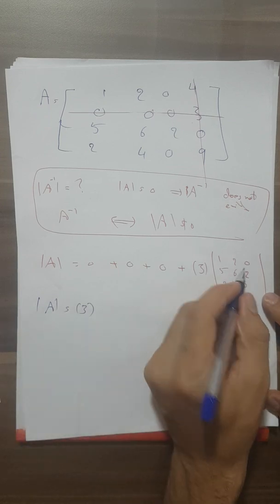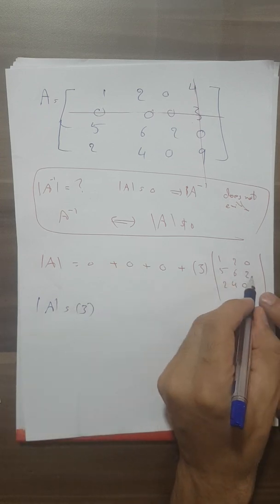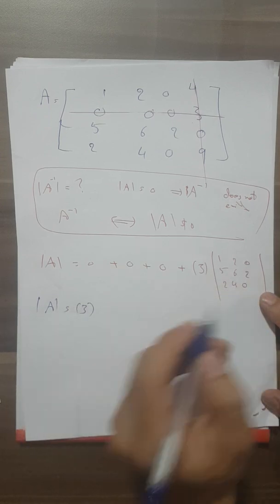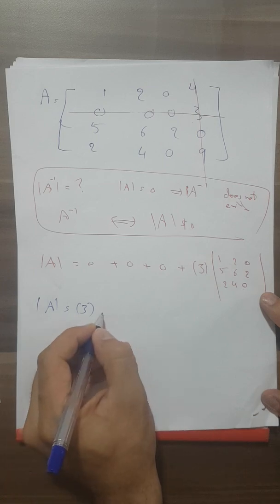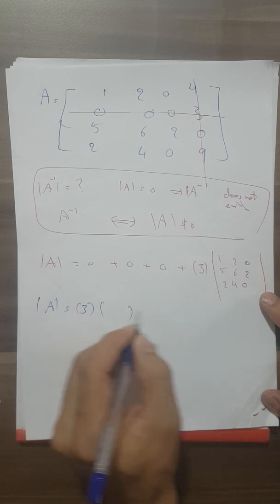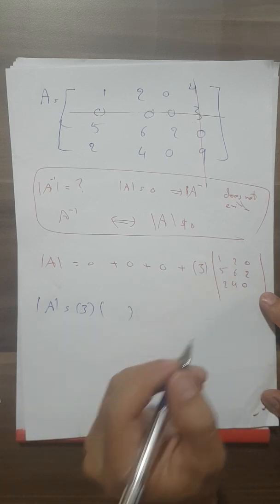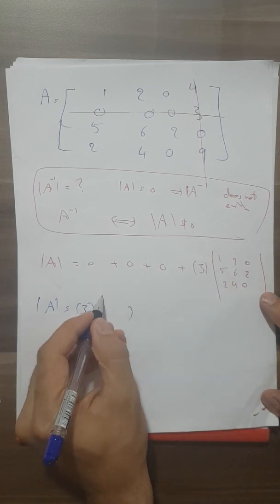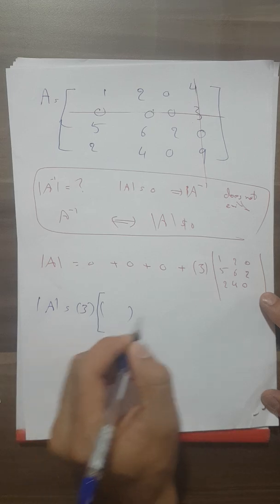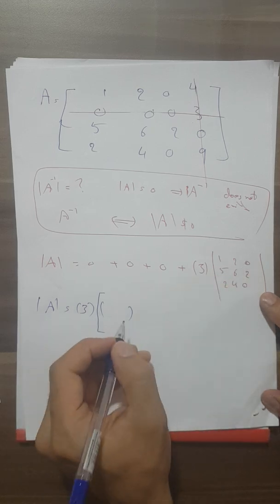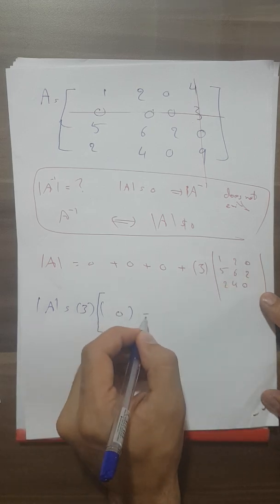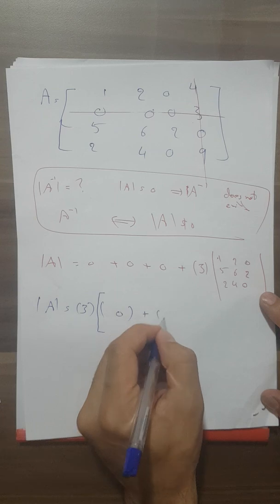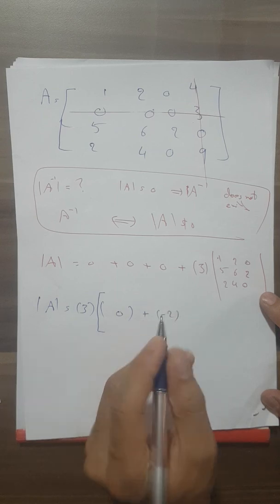We are going to use another trick, expanding along a column that has two zeros. Using the sign pattern positive, negative, positive, negative — we get negative two times the relevant minor.